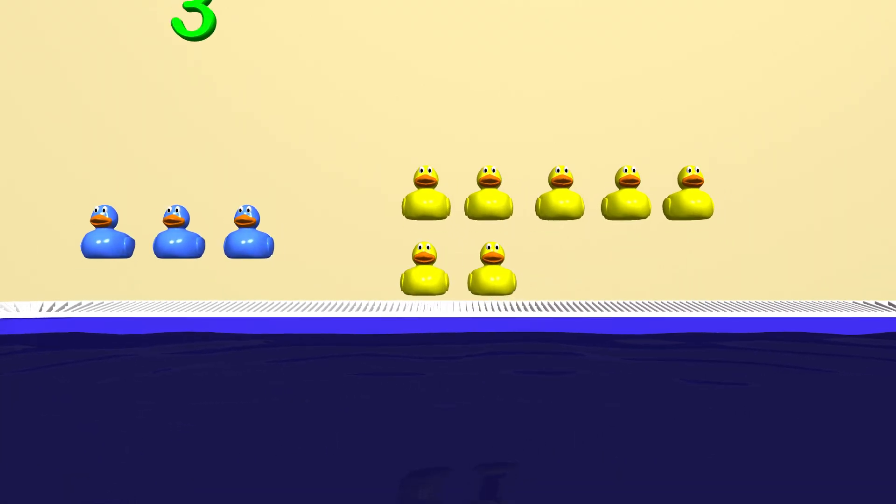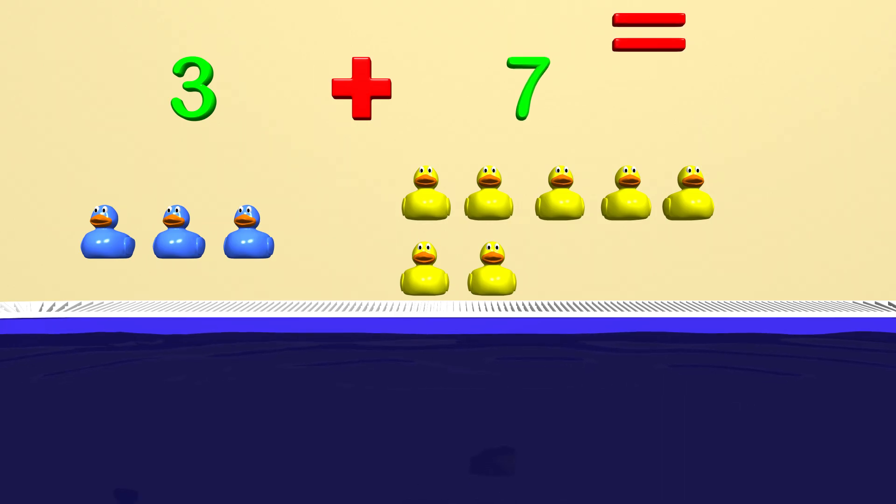Here are some ducks. We have 3 blue ducks and 7 yellow ducks. Can you tell me how many ducks we have in all? We have 10 ducks all together. When you add 3 and 7, you get 10 ducks in all.